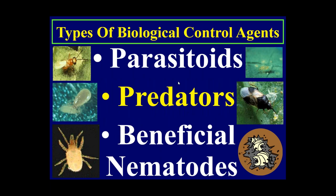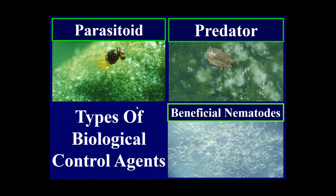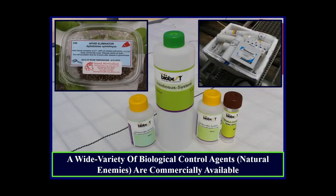Let's talk about the types of biological control agents: parasitoids, predators, and beneficial nematodes. Encarsia formosa is the parasitoid for the greenhouse whitefly. Neoseiulus cucumeris is the predatory mite for western flower thrips. Beneficial nematodes are very effective against fungus gnat larvae that reside in the growing medium.